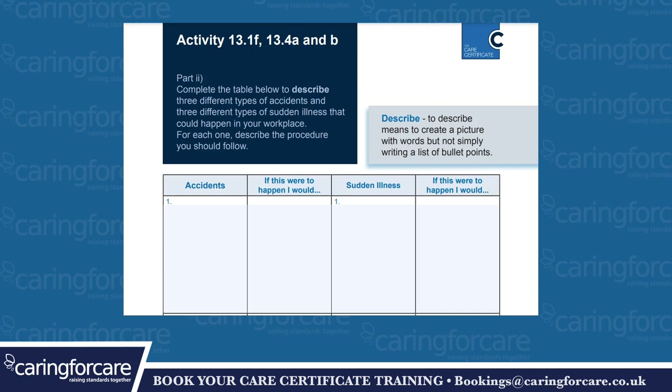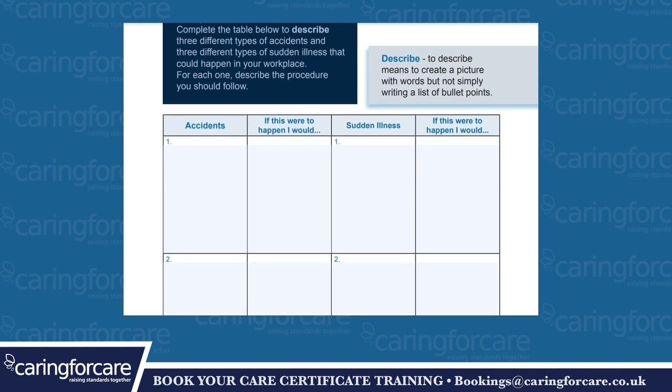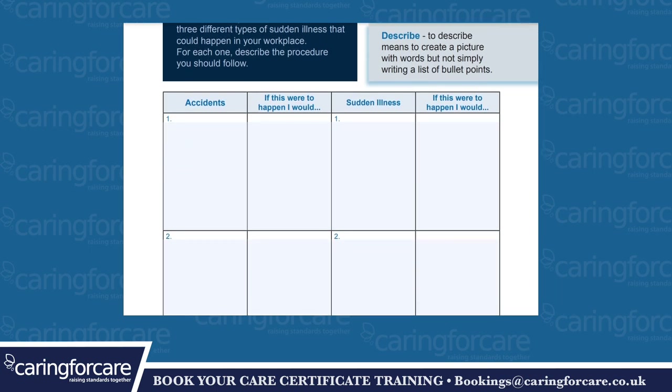Activity 13.1f, 13.4a and b. To describe means to create a picture with words but not simply writing a list of bullet points. Complete the table below to describe three different types of accidents and three different types of sudden illness that could happen in your workplace. For each one, describe the procedure you should follow. Accidents — if this were to happen I would. Sudden illness — if this were to happen I would.